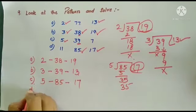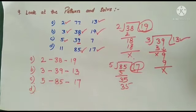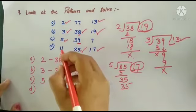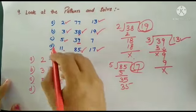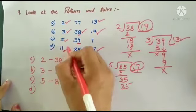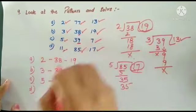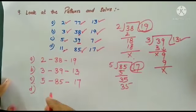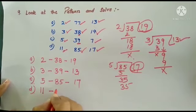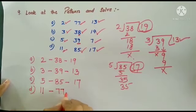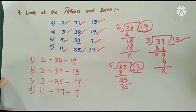Similarly, D. Look at D — the last one has come. Even without calculation, look: 11 and 77 remain, and here 7 remains. So we will write 11, 77, and here we will write 7.